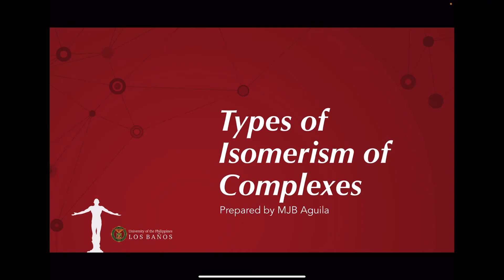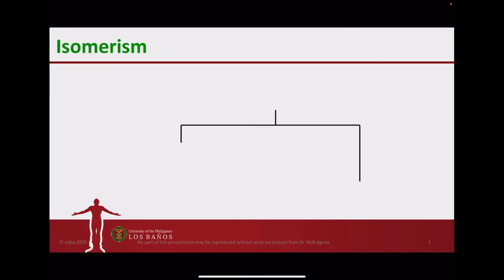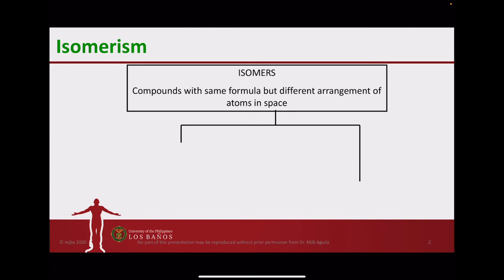Hello everyone, this is Professor Mei-Johan Aguila, and in this video lecture we're going to discuss the different types of isomerism exhibited by the transition metal complexes. Isomerism is when there are several compounds which have the same formula but they differ in how the atoms are arranged in space. We call these compounds isomers of one another.